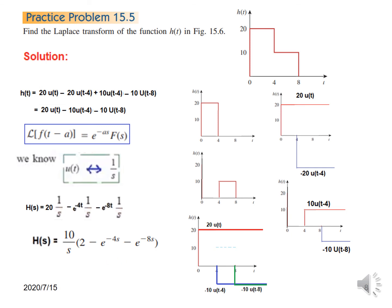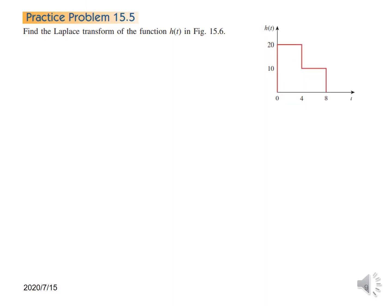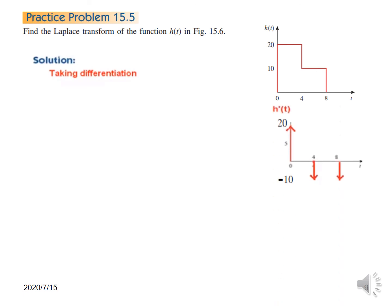We will also try to solve the practice problem by differentiation. Taking the differential, we get a curve of amplitude 20 delta at the start. At t equal to 4 it comes down, giving minus 10 delta. And at t equal to 8, also minus 10 delta. So h'(t) is 20 delta(t) minus 10 delta(t minus 4) minus 10 delta(t minus 8).